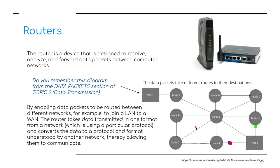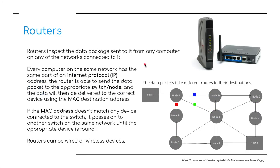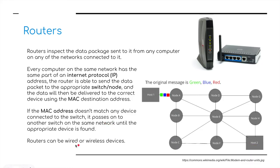The router is a device designed to receive, analyze, and forward data packets between computer networks. By enabling data packets to be routed between different networks — for example, joining a LAN to a wide area network — the router takes data transmitted in one format and converts it to a protocol and format understood by another network, allowing them to communicate. Routers inspect data packets from any computer on any connected network; every computer on the same network has the same part of an IP address. The router sends the data packet to the appropriate switch or node, and data is delivered to the correct device using the MAC destination address. If the MAC address doesn't match any connected device, it passes to another switch until the appropriate device is found. Routers can be wired or wireless devices.